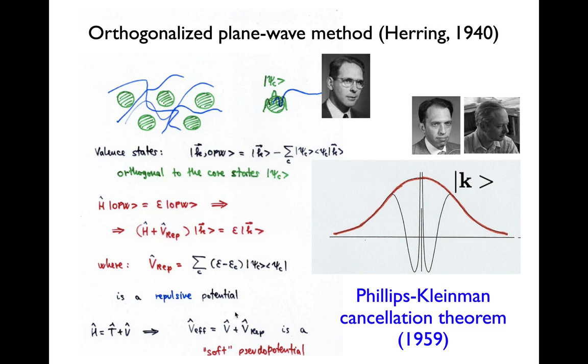When you add it to the attractive Coulomb potential, you get a partial cancellation, and the resulting effective potential is soft.